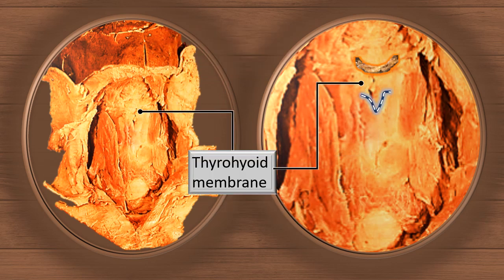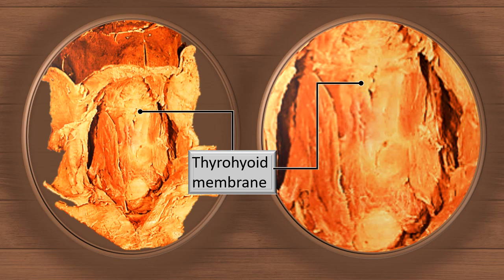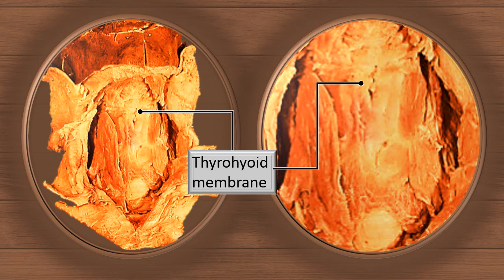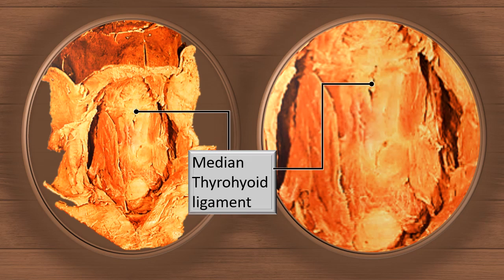Between the hyoid bone and the laryngeal prominence there is a membrane called the thyrohyoid membrane. In the midline, both membranes are fused and slightly thickened, and we call that central part of this conjoint membrane the thyrohyoid ligament — specifically, the median thyrohyoid ligament.